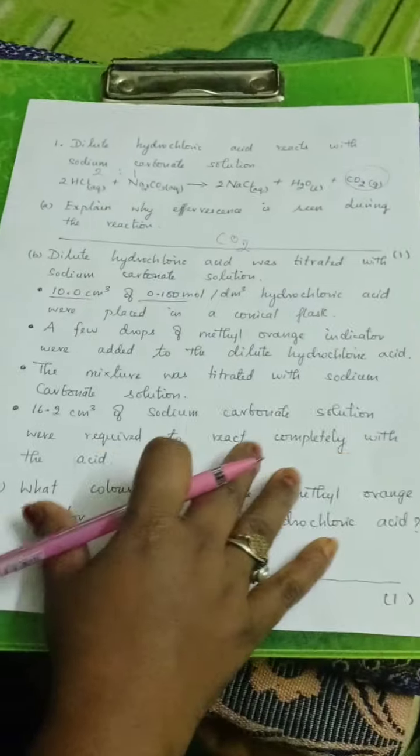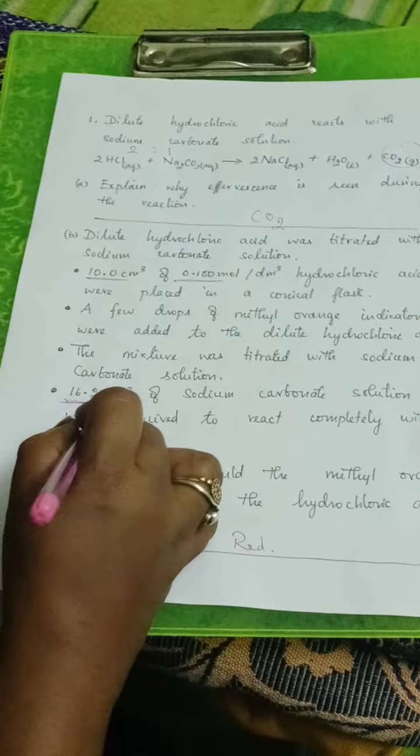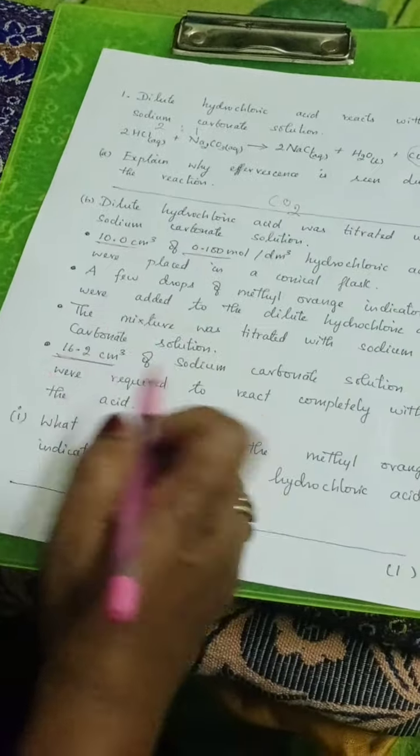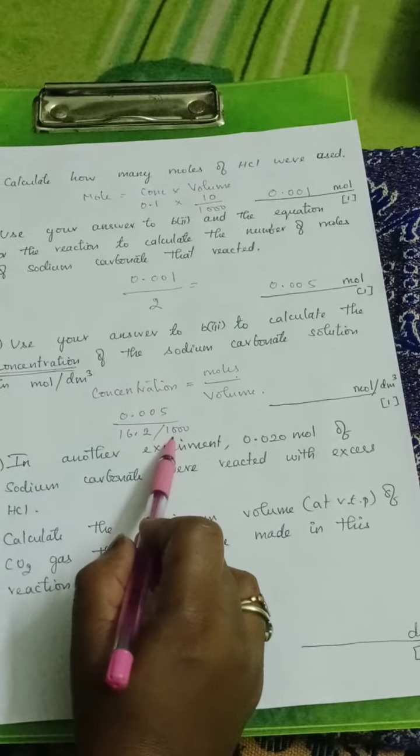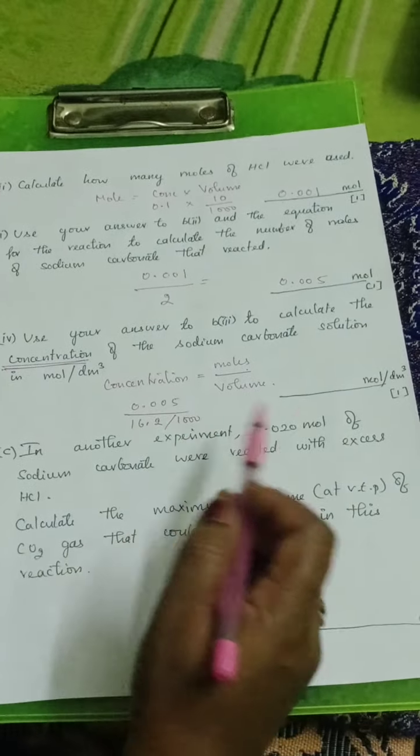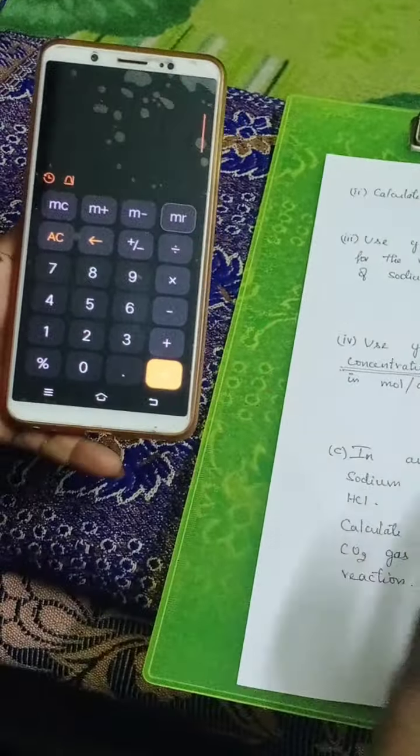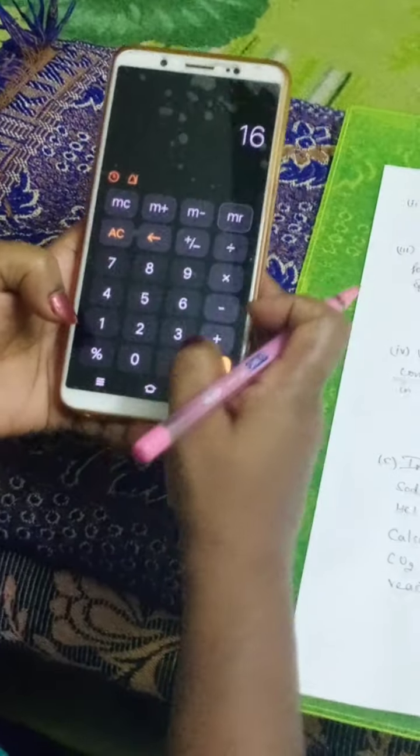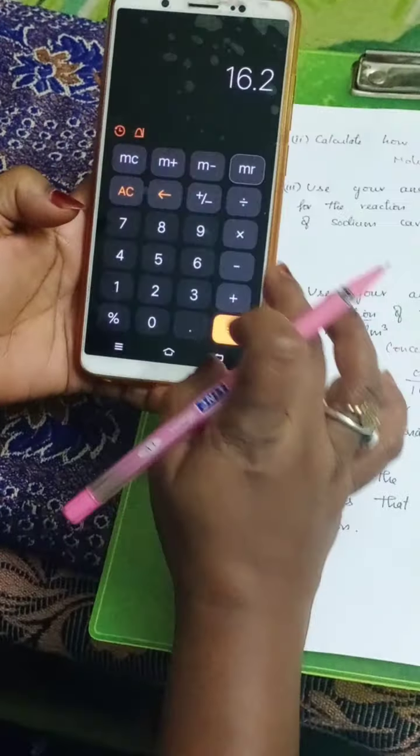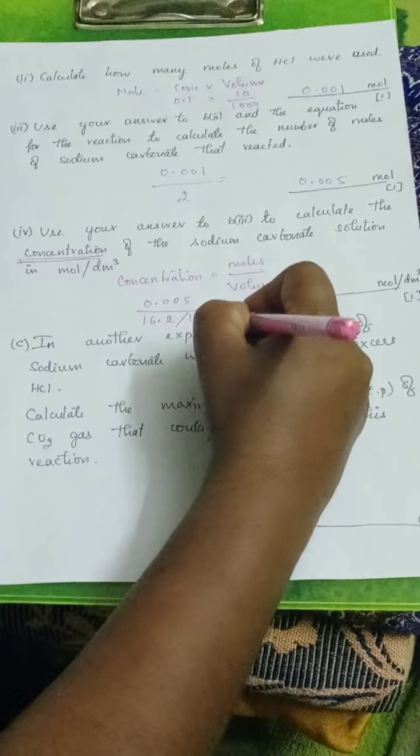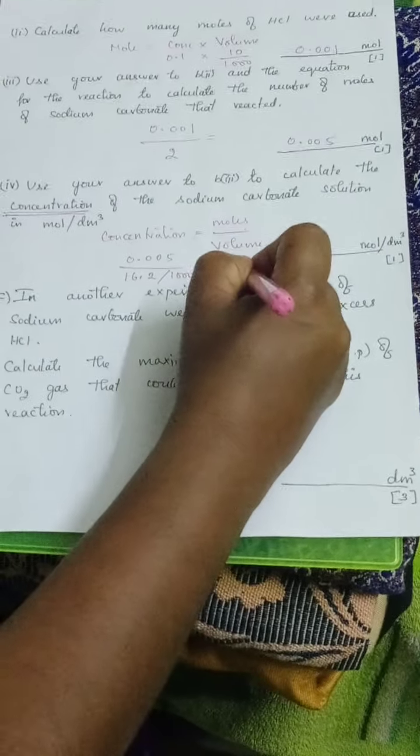16.2 is the volume of sodium carbonate solution given here, 16.2 centimeter cube. You have to convert into decimeter cube, so 16.2 by 1000. 16.2 divided by 1000 will give you 0.0162.